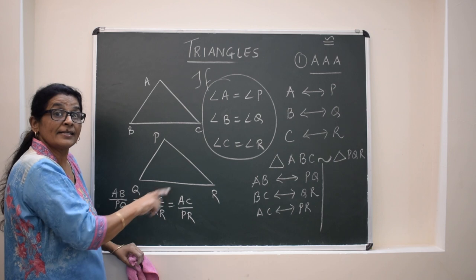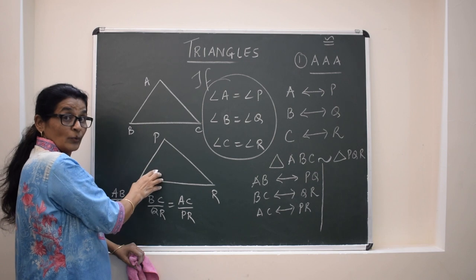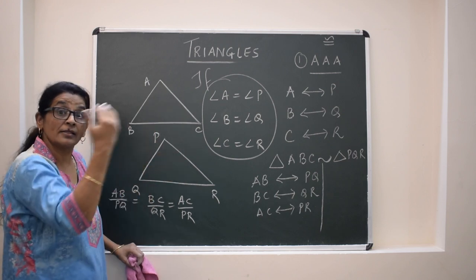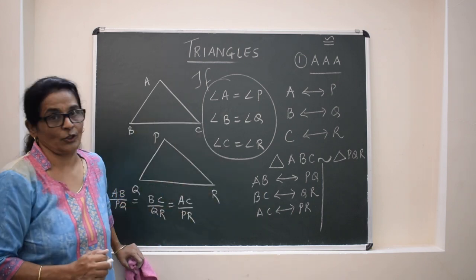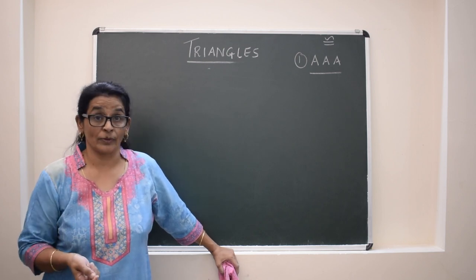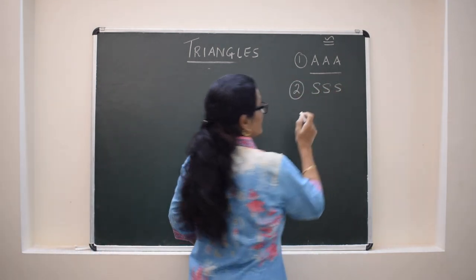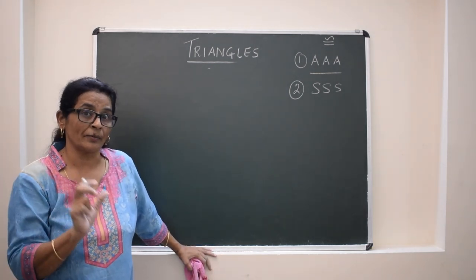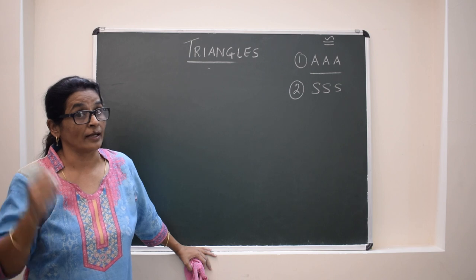This criteria I took is AAA. The second criteria is SSS — if all the three sides of one triangle we take the ratio with the other: AB upon PQ, BC upon QR, and AC upon PR are in the same ratio, then the triangles will be similar and the corresponding angles will be equal.